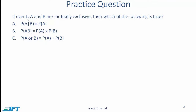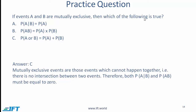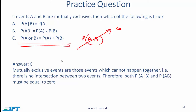A quick practice question: if events A and B are mutually exclusive, then which of the following is true? The correct answer is C, because for mutually exclusive events, the joint probability of AB is simply zero — you can't have A and B both happening. So the addition rule simplifies to probability of A plus probability of B.